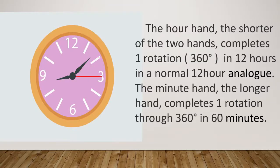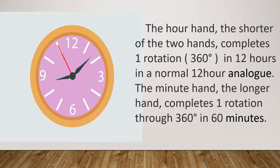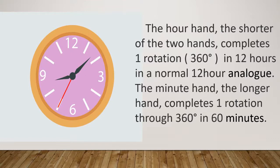The hour hand is the shortest of the two hands and completes one rotation, that is 360 degrees, in 12 hours on a normal 12-hour analogue clock. The minute hand, the longer hand, completes one rotation of 360 degrees in 60 minutes.